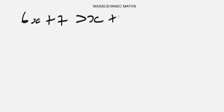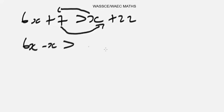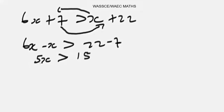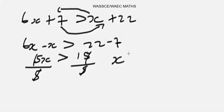Let's look at another example. We are given: 6x + 7 > x + 22. To solve this, collect like terms — letter terms together and number terms together. So: 6x - x > 22 - 7, which gives 5x > 15. Dividing both sides by 5, we get x > 3. That is the answer.